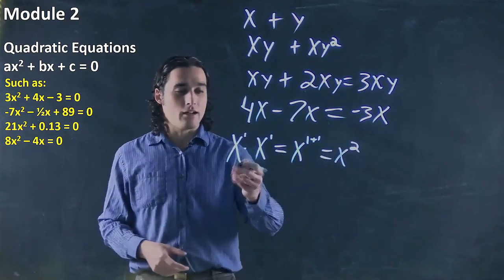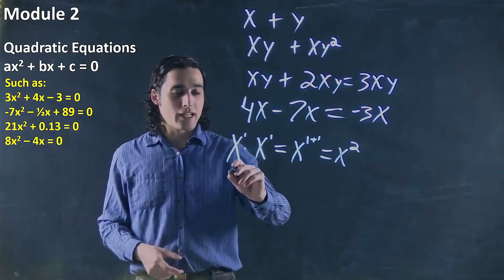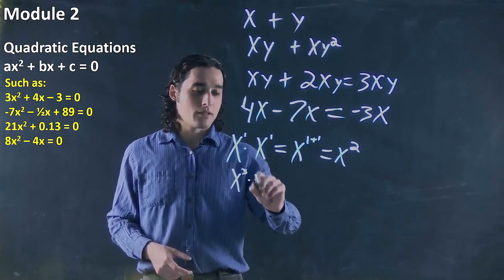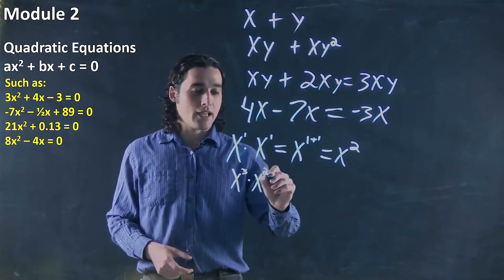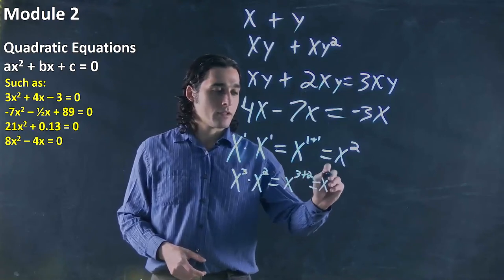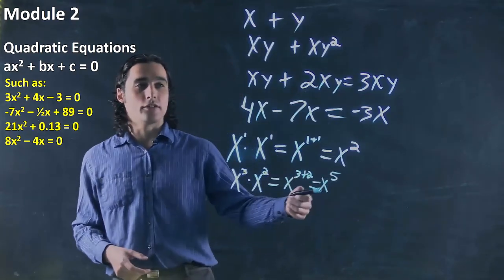Or we might have, I mean this is a fairly simple case, but you could have something like x cubed times x squared. Again, add the coefficients. When we multiply, we add the coefficients.